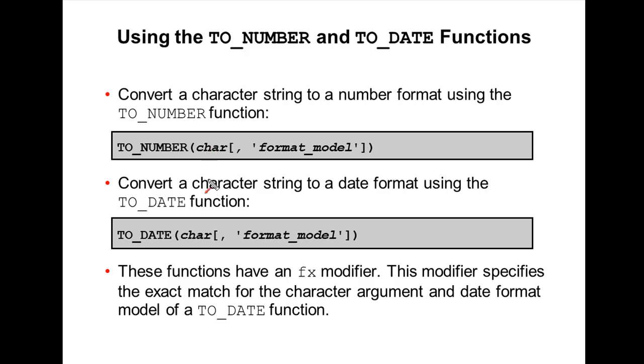The first argument is char, next argument is format_model. And to convert a character string to date format, use the TO_DATE function. The basic syntax is TO_DATE. First argument is char and second argument is format_model.